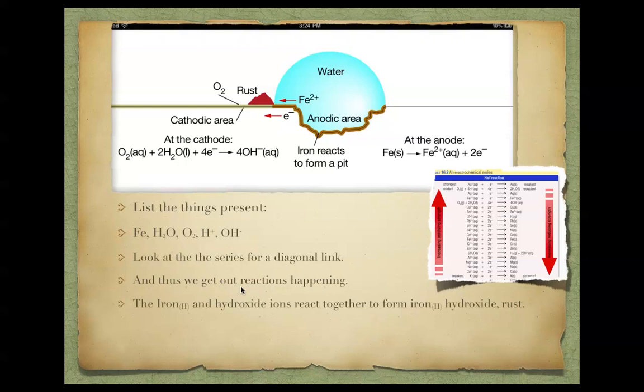We get our reactions happening, and our products here, our iron 2 plus and our hydroxide ion, they kind of get together and they form rust, which is iron hydroxide, or iron 2 hydroxide.